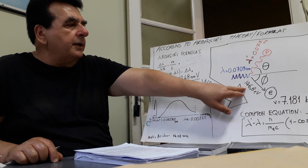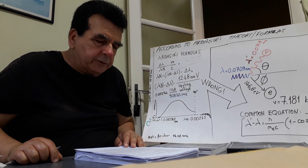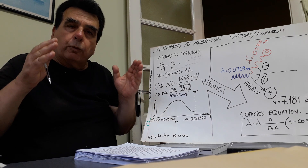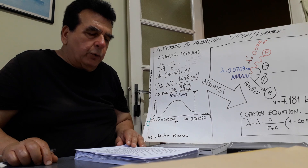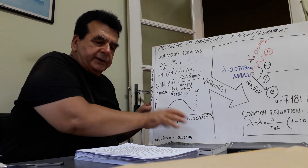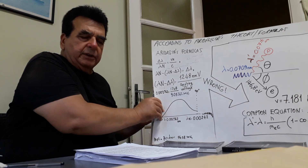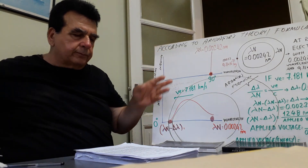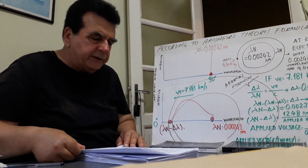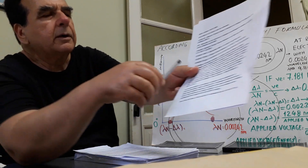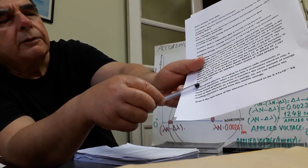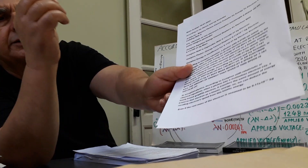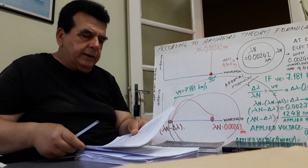Not 146.8 electron volts. If an electron with 9.11×10⁻³¹ kilogram rest mass moves at 7.181 kilometers per second, the amount of energy that gives it this speed is 525,110.68 electron volts.